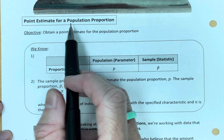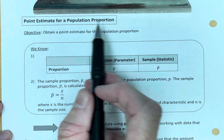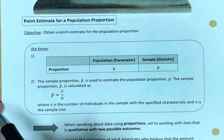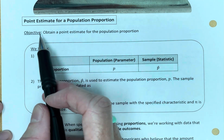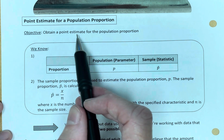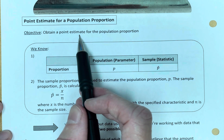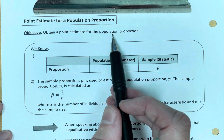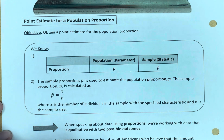Point estimate for a population proportion. Our objective: obtain a point estimate for the population proportion.